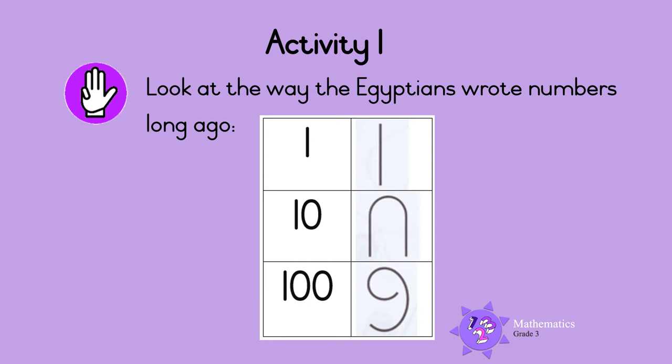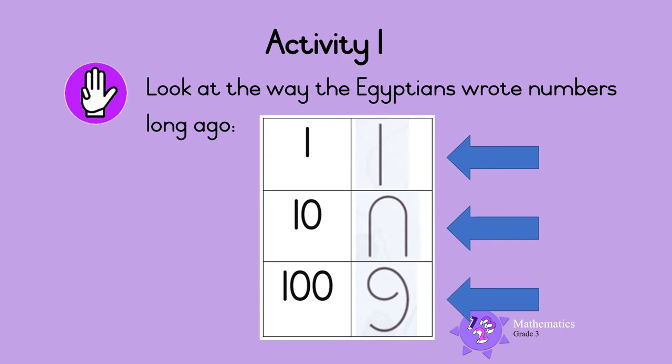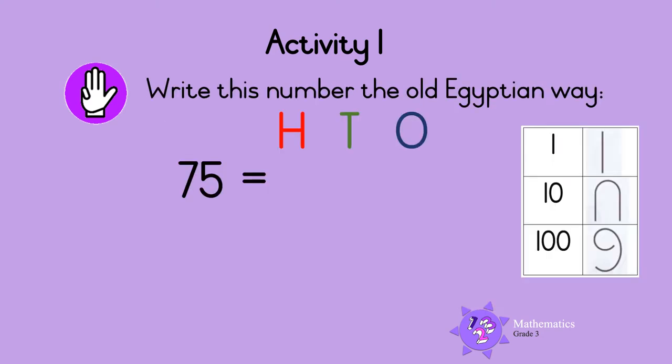Activity 1. Look at the way the Egyptians wrote numbers long ago. This symbol was used for the number 1, this symbol was used for 10, and this symbol was used for 100.